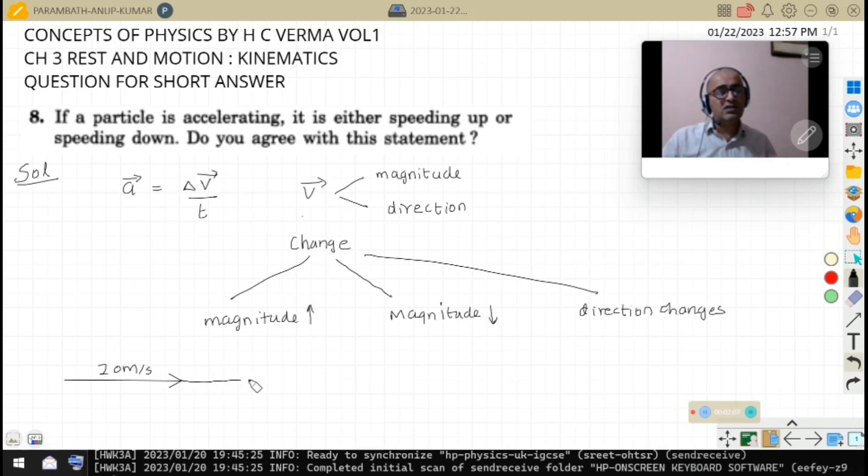And next one second interval it is having say 15 meters per second, then 10 meters per second, then 5 meters per second. This is the case where it is speeding down.